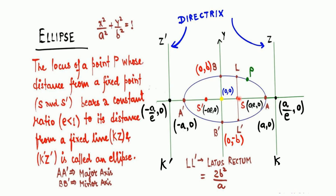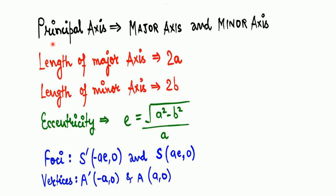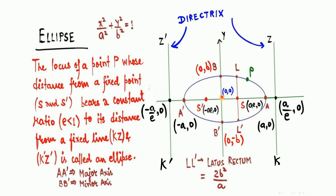The semi-major axis is half the length of the major axis, so if the semi-major axis length is 'a', the total major axis length is 2a. Similarly, the semi-minor axis length is 'b' and the total minor axis length is 2b. The standard equation for an ellipse is x²/a² + y²/b² = 1. The length of the major axis is 2a and the length of the minor axis is 2b.